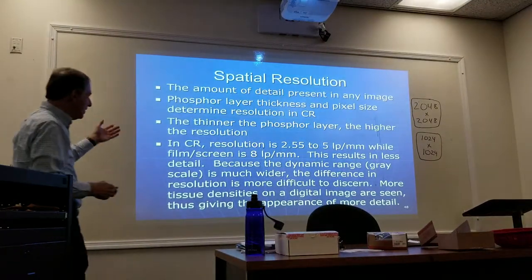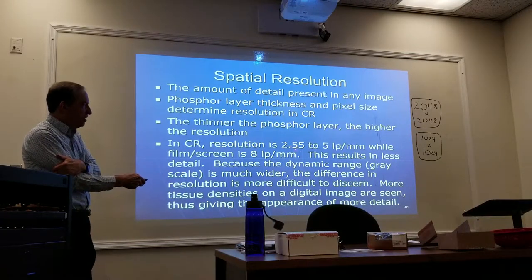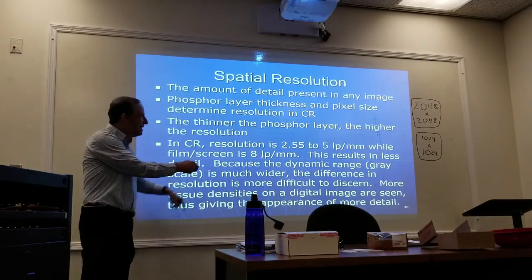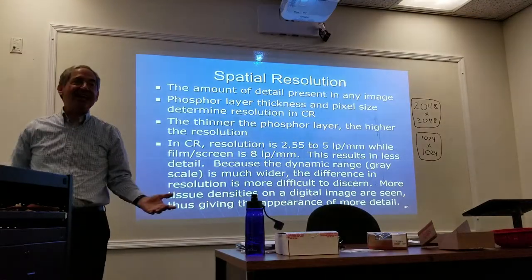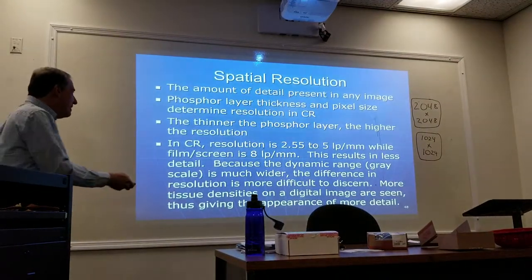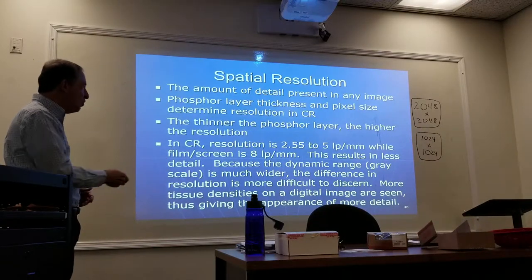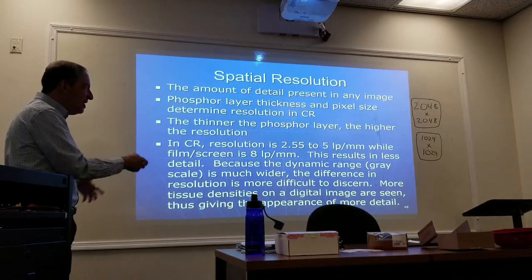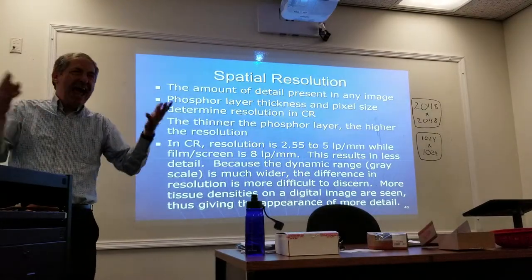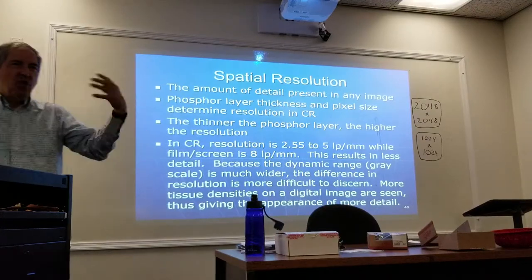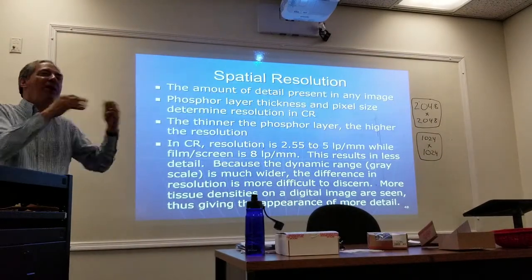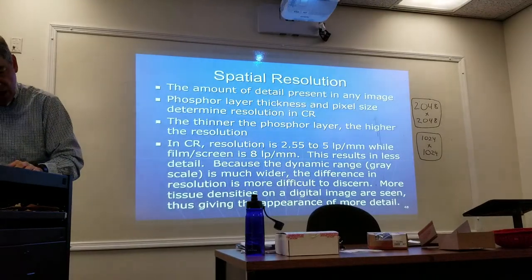Interestingly, in CR the resolution is about 2.5 to 5 line pairs per millimeter, but film screen is about 8 line pairs — so this advanced technology actually has less resolution. However, it doesn't appear to be less, because the wide dynamic range and grayscale make the tissue densities give the appearance of more detail. Your eyes are being fooled — there's actually more detail in film, but the wide dynamic range makes digital appear more detailed.